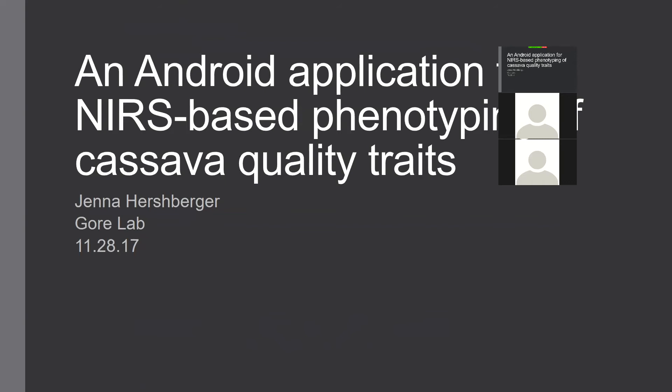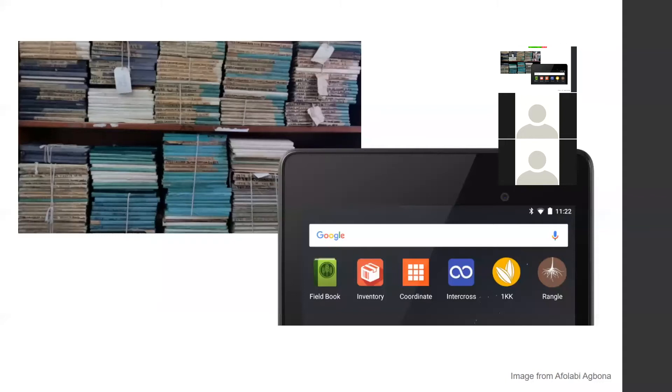This is a production of Cornell University. My name is Jenna Hershberger. I'm a second-year grad student in Mike Gore's lab, and today I'll be talking about one of several projects that I'm working on. This one is called an Android application for near-infrared spectroscopy-based phenotyping of cassava quality traits. This project is part of a larger PhenoApps project funded by the NSF, and is led by Mike Gore as well as Jesse Poland.